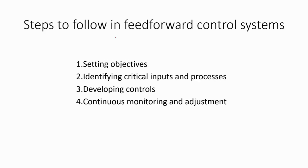These are the common steps under feedforward control systems. Setting objectives: the first step is to establish clear and specific objectives that need to be achieved. Identifying critical inputs and processes: once the objectives are established, the next step is to identify the critical inputs and processes required to achieve the objectives. Developing controls: controls are developed to monitor and manage the critical inputs and processes to ensure they are on track to achieve the objectives. Finally, continuous monitoring and adjustment: the system is continually monitored and adjustments are made to the inputs and processes as needed to ensure that the objectives are achieved.